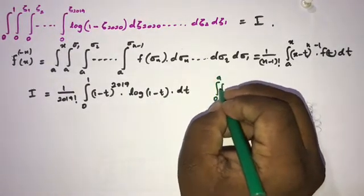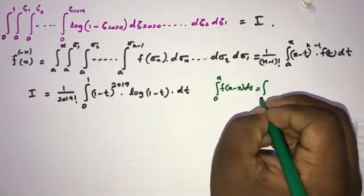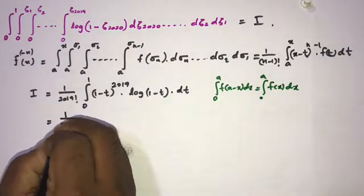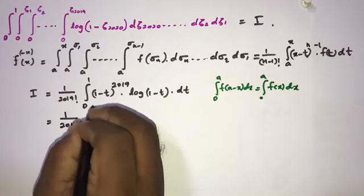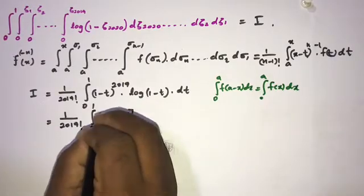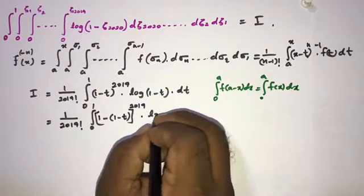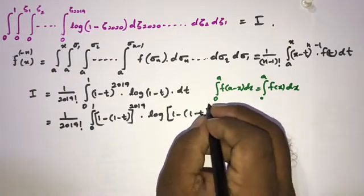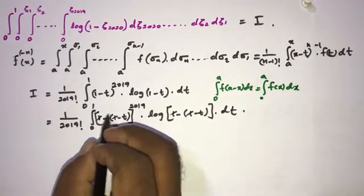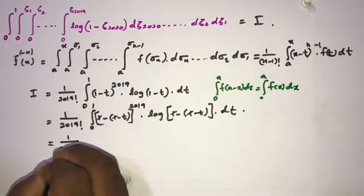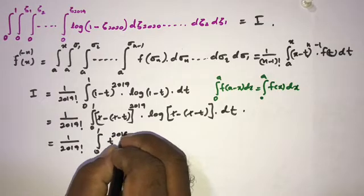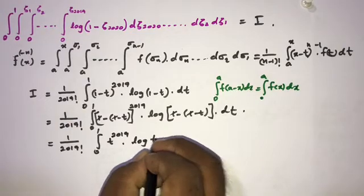Now we apply King's property: the integral from 0 to a of f(x) dx equals the integral from 0 to a of f(a − x) dx. Substituting t → (1 − t), the expression (1 − t)^2019 becomes t^2019 and ln(1 − (1 − t)) = ln(t), giving us (1/2019!) times the integral from 0 to 1 of t^2019 · ln(t) dt.